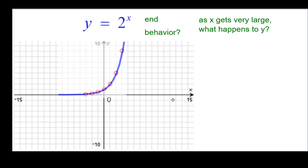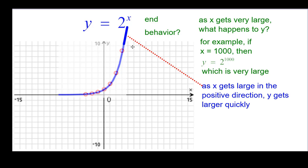So as x gets very, very large, what's happening to the y values? For example, if x was 1,000, then 2 to the thousandth power is just out of sight large. So that would mean the graph would be going up very quickly right here. y is getting very large quickly.